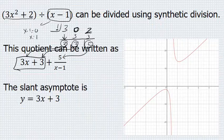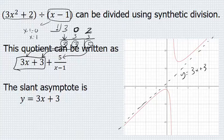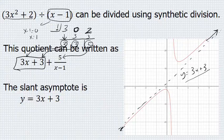If we look at the graph of this function, this dotted line would have the equation y equals 3x plus 3. As this graph moves towards positive infinity, it would be getting closer and closer to y equals 3x plus 3, and towards negative infinity, it would also be getting closer and closer to y equals 3x plus 3.